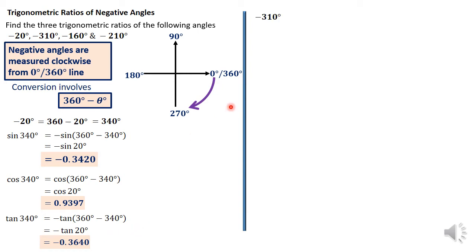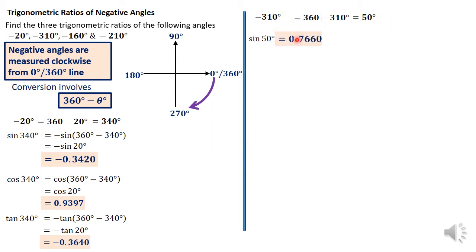Turning to the second question: negative 310 degrees. We convert: 360 minus 310 = 50 degrees. Therefore we are looking for sin(50°) = 0.7660, cos(50°) = 0.6429, and tan(50°) = 1.1918.